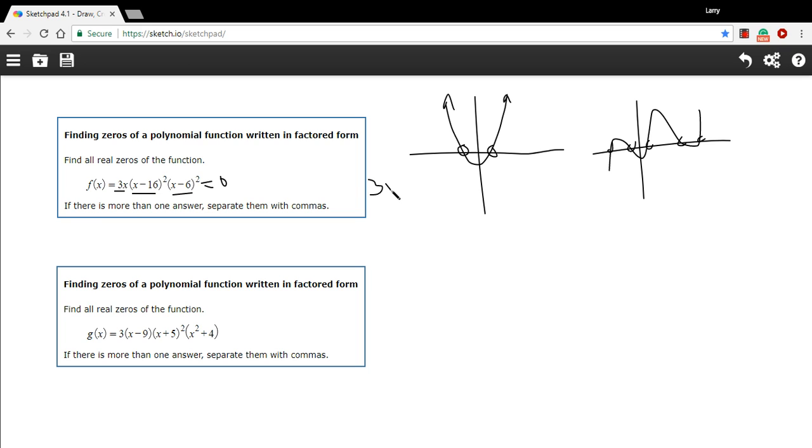So we'd say 3x equals zero. And we'd say x minus 16 quantity squared equals zero. And x minus 6 quantity squared equals zero.